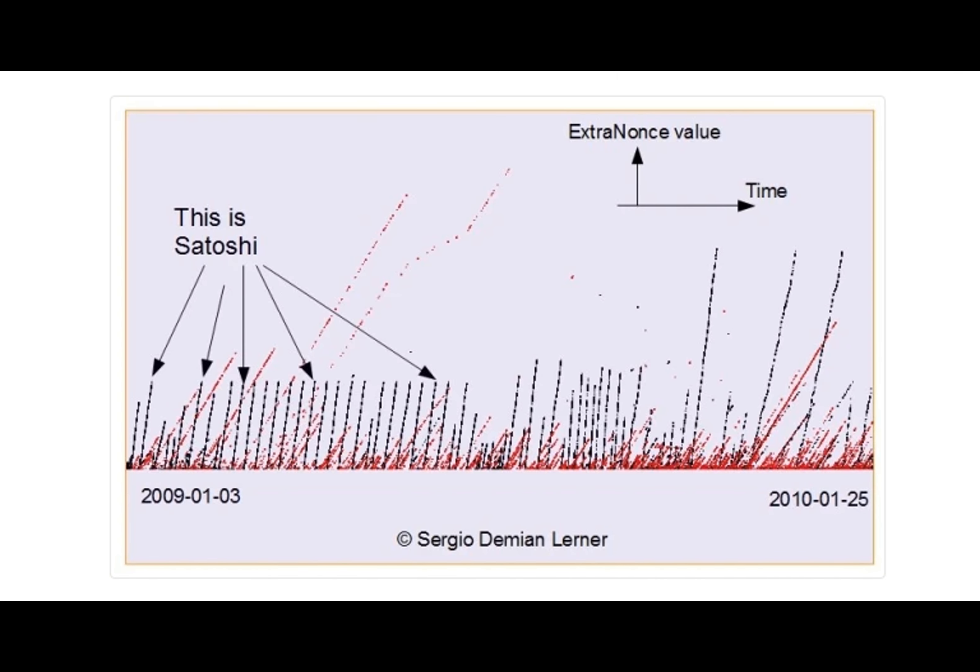The worst-case scenario leads to a single disputed data or computation step being verified on-chain.